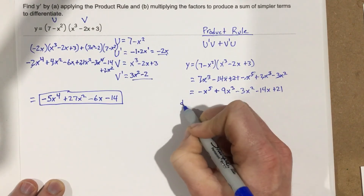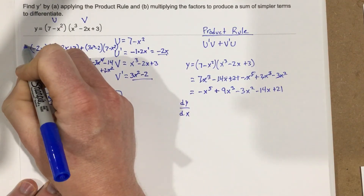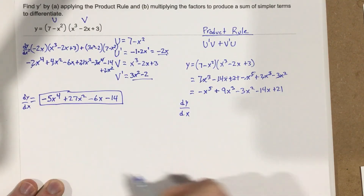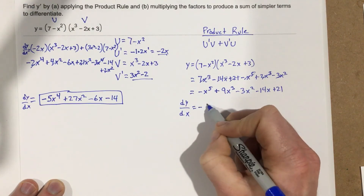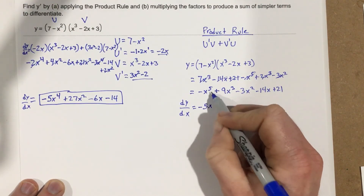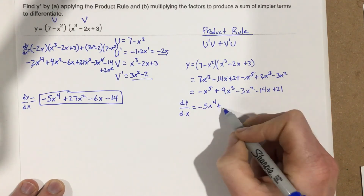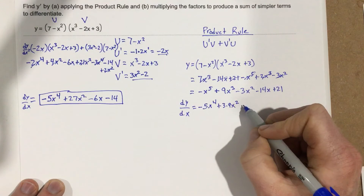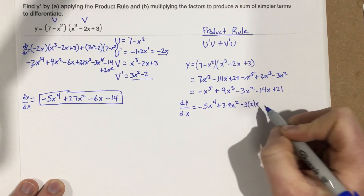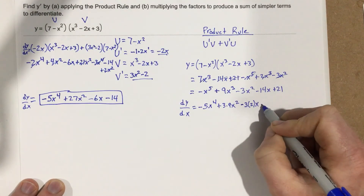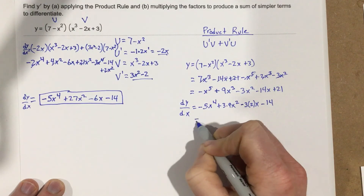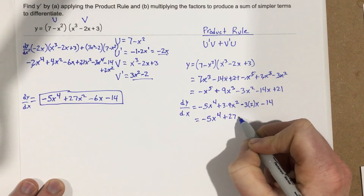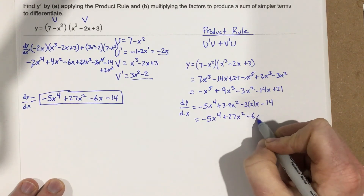Let's take the derivative now — dy over dx. Bring the power to the front: negative x to the fifth gives negative 5x to the 4th. 9x cubed gives 27x squared. Negative 3x squared gives minus 6x. Minus 14x gives minus 14. The constant 21 cancels. So dy over dx equals negative 5x to the 4th plus 27x squared minus 6x minus 14.